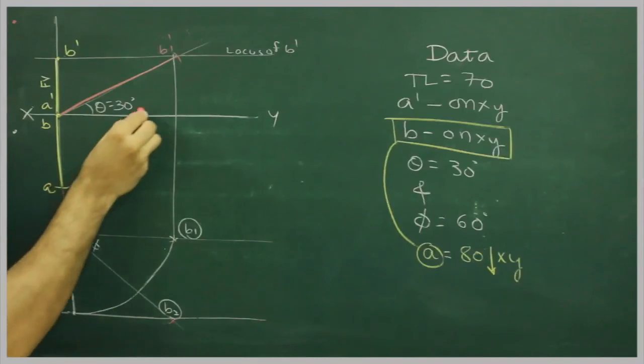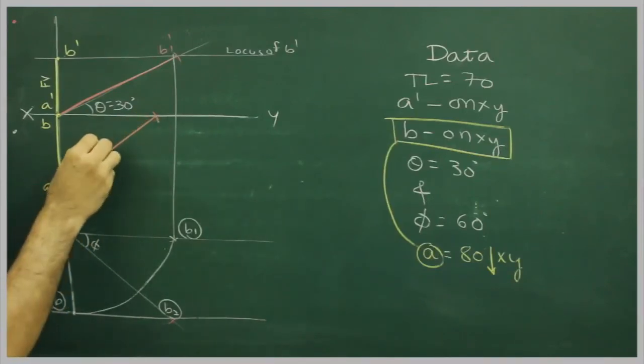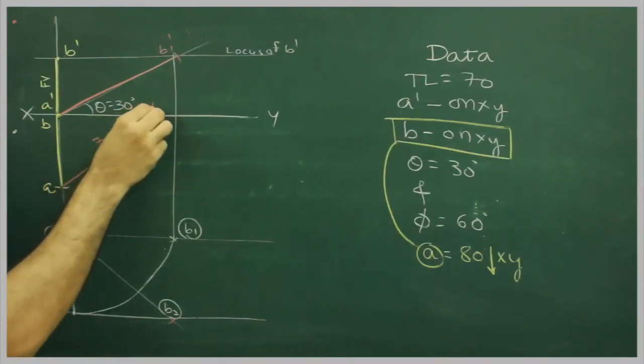And we know true length also. So from a, we can cut true length, that is 70, and this would be b.